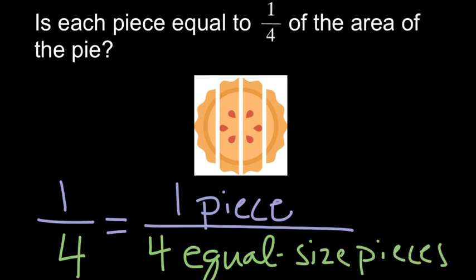So in this case, four equal size pieces. So the question is, is each piece one of four equal size pieces?